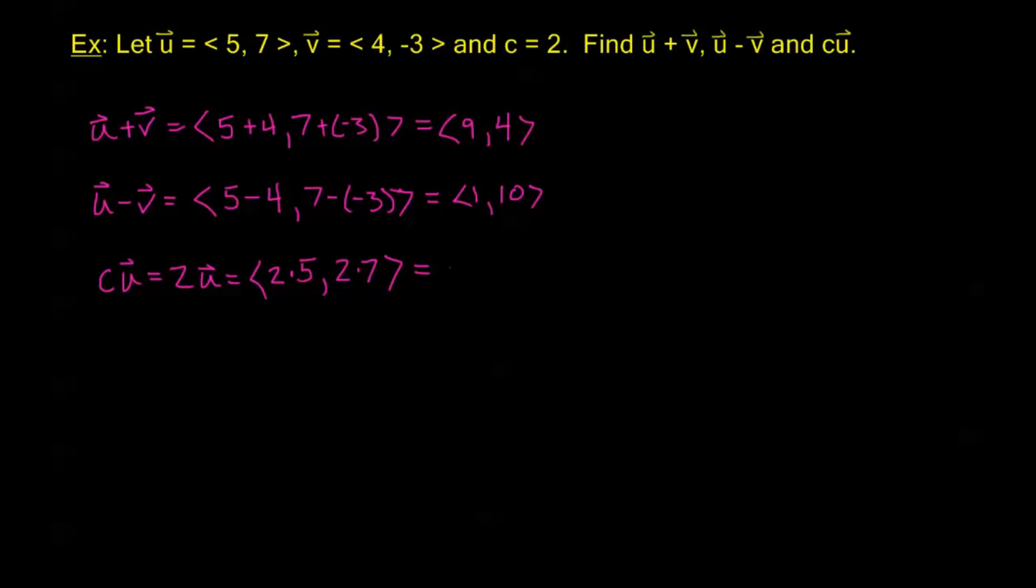Now remember from our previous video, when we geometrically defined what these operations are, this last operation, scalar multiplication, it makes the vector grow in length, shrink in length, it can make it change directions by exactly 180 degrees, so go in exactly the opposite direction, but it cannot change the angle theta, it can't change the direction that the vector is facing.